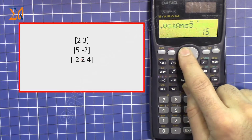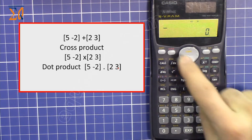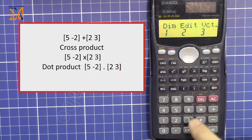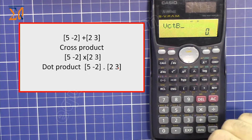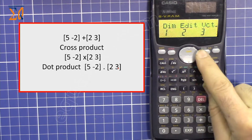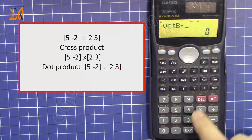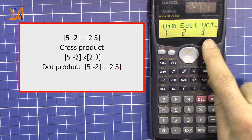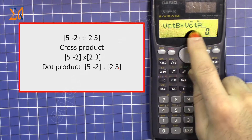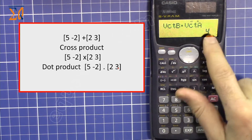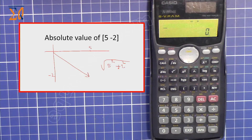Now let's do the dot product between vector B and vector A. Press SHIFT 5, then 3, then 2 to recall vector B. To insert the dot operator, press SHIFT 5, scroll right to find dot, and press 1. Then press SHIFT again, then 3, then 1 to recall vector A. You'll see vector B dotted with vector A — press equals to get the scalar result.